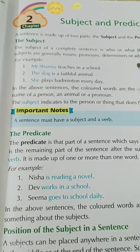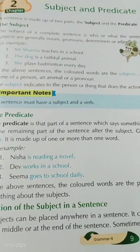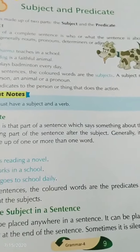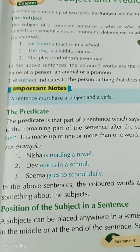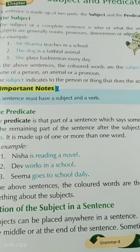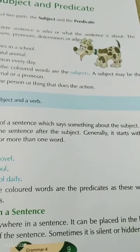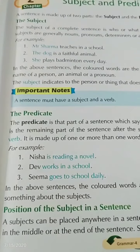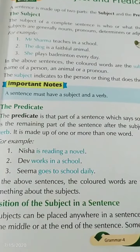Now, what are predicates? The predicate is the part of a sentence which says something about the subject. It is the remaining part of the sentence after the subject. Generally it starts with a verb and is made up of one or more words.